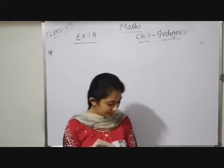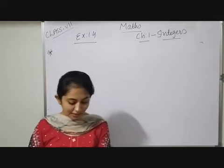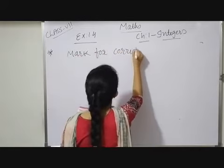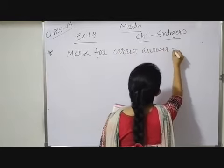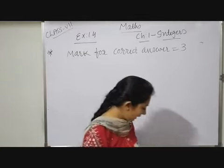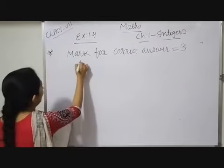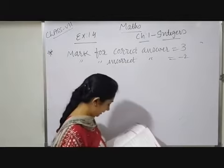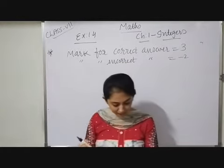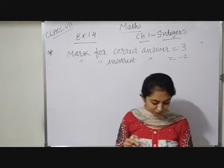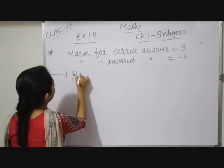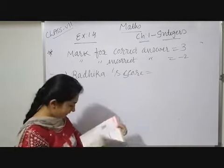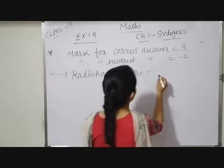The word problem: In a class test, plus 3 marks are given for every correct answer, so marks for a correct answer = 3. Minus 2 marks are given for every incorrect answer, so marks for an incorrect answer = minus 2. No marks for not attempting. Radhika scored a total of 20 marks.